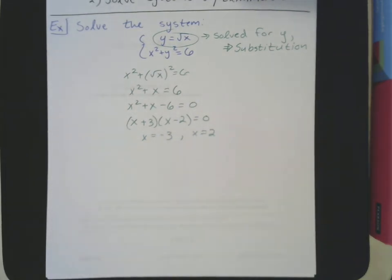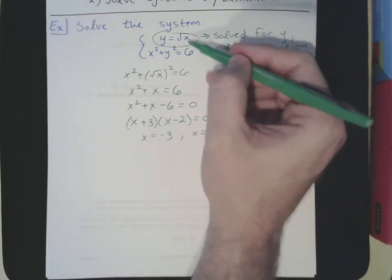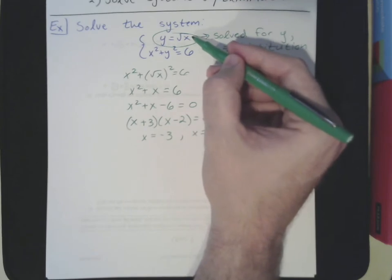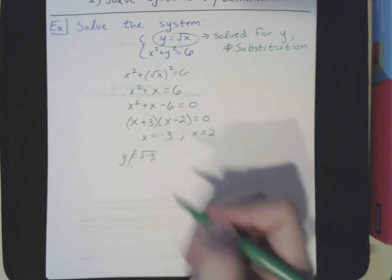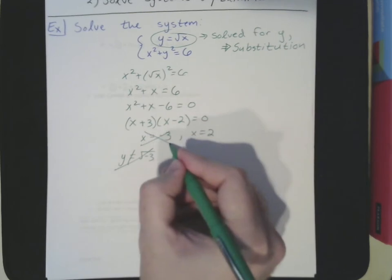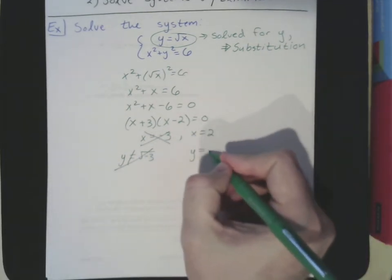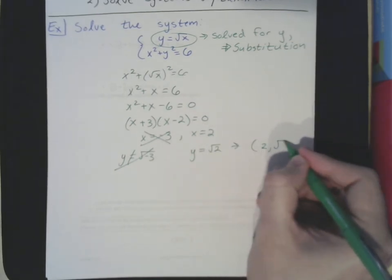Just like with quadratics, our equations were non-linear, so we have to check these solutions in both equations. Since this involves the square root of x, y can't equal the square root of negative 3 — that's an imaginary number, so we cancel that one out. Our only choice is y equaling the square root of 2, which means our first answer is the point (2, √2).